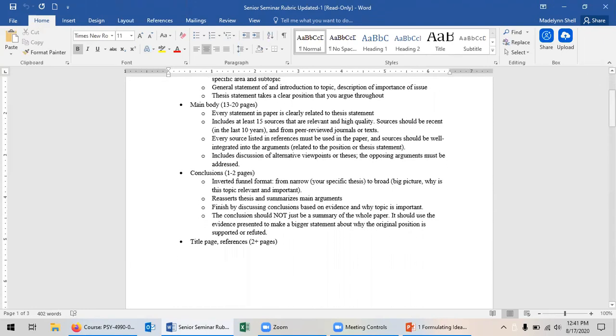The main body of your paper should be about 13 to 20 pages long. Every statement in your paper should be clearly related to your thesis. You're going to need to keep coming back to whatever argument you've decided you're making. You will need to include at least 15 sources that are relevant and high quality.